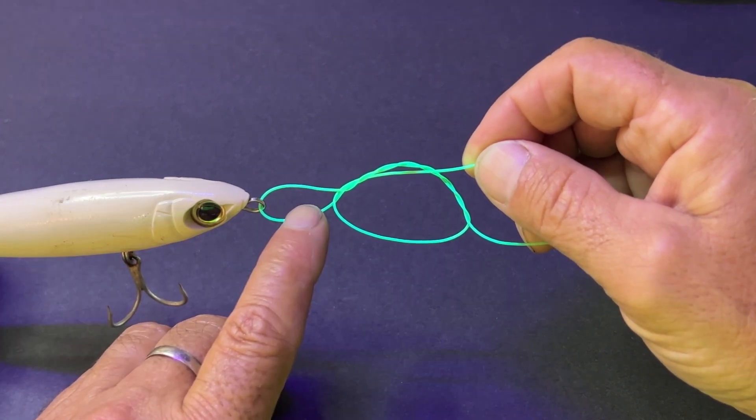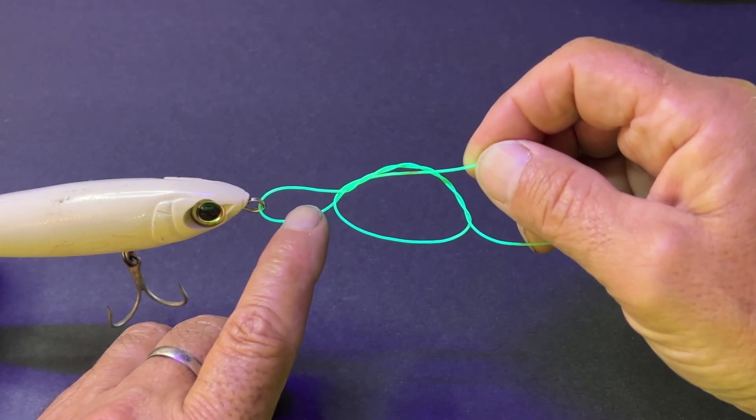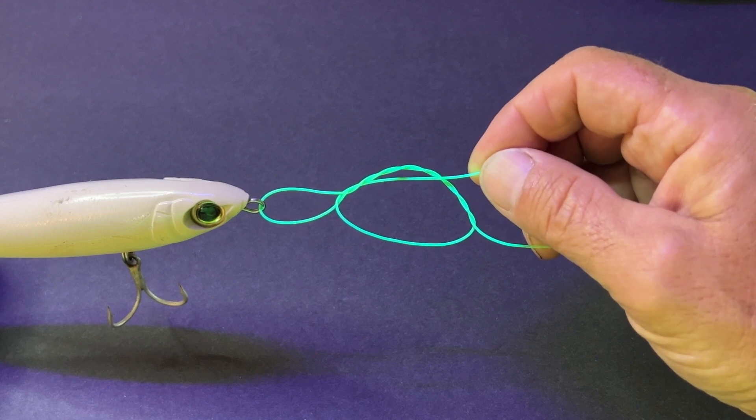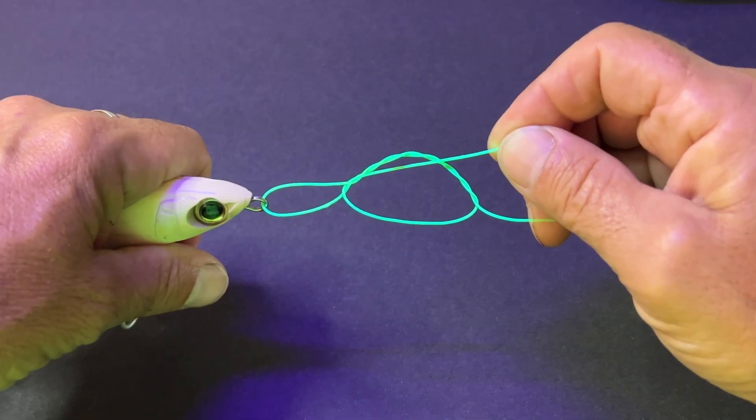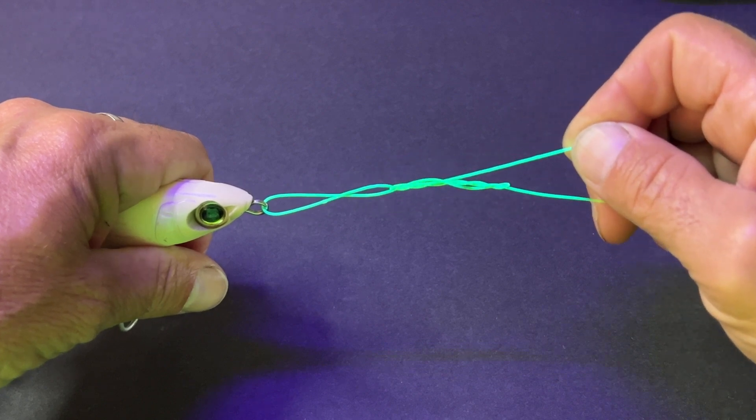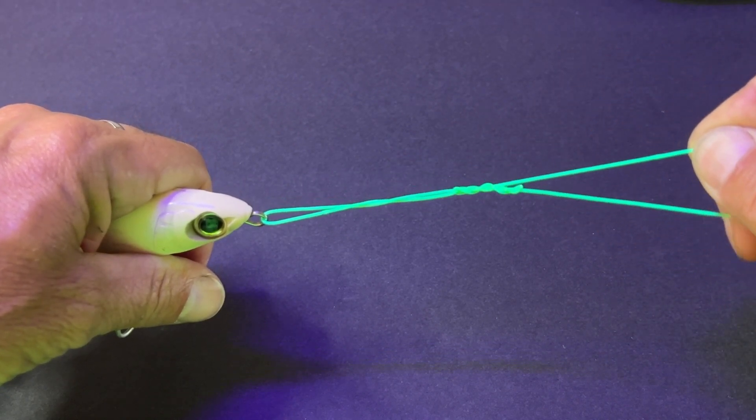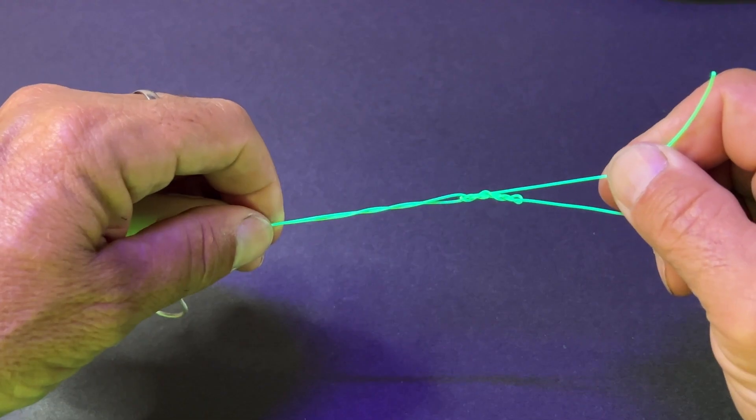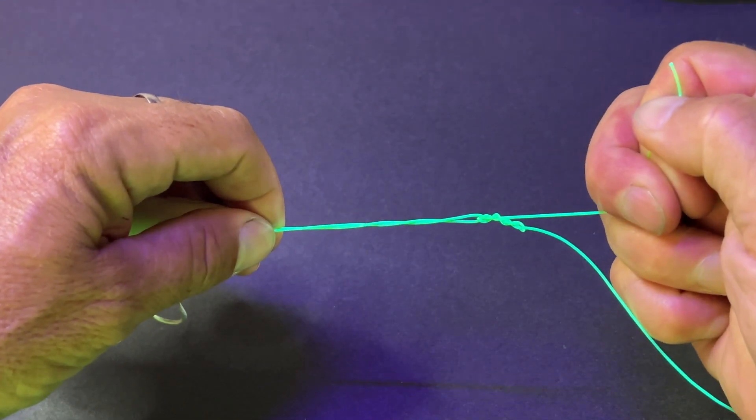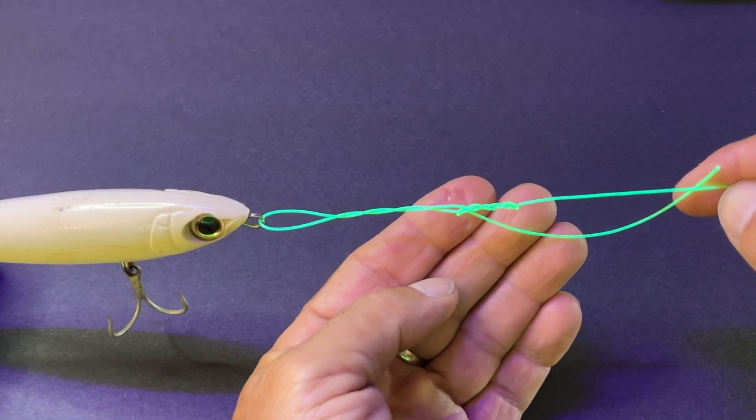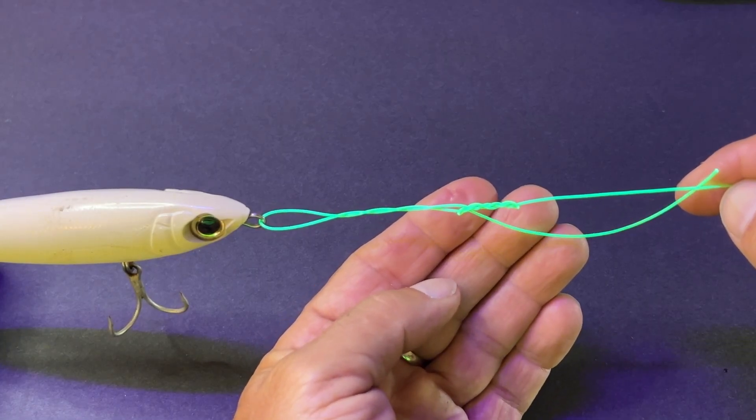If this line gets too hot, it can weaken the line and you won't know it's weak until the line breaks when you're trying to fight a big fish. So now I'm going to pull this tagline up a little towards the right. Now I'm just snugging this knot up at this point.